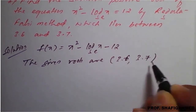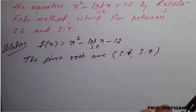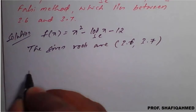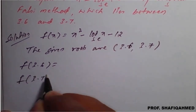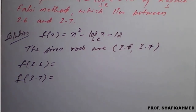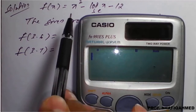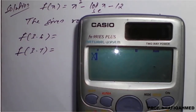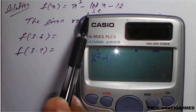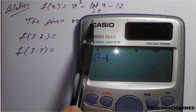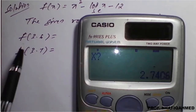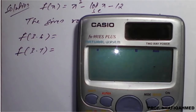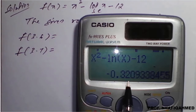Now we will check the values of f(3.6) and f(3.7) — which one is positive and which one is negative. We will type this equation in the calculator: x² minus ln(x) minus 12. Go for the calc option. For x = 3.6, it is showing minus 0.3209.